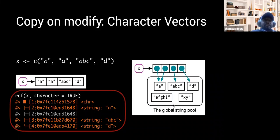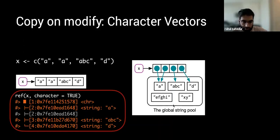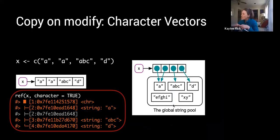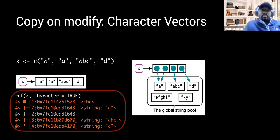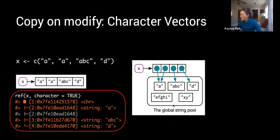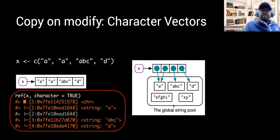Continuing the discussion: does this mean that every time you restart R, the global string pool starts with a blank slate and keeps adding as you create character vectors? Yes. The word 'global' means it can be accessed from everywhere — it's available to any function or program you call through R once it's been created, rather than being a pool within a specific function. That meaning of 'global' makes sense now.